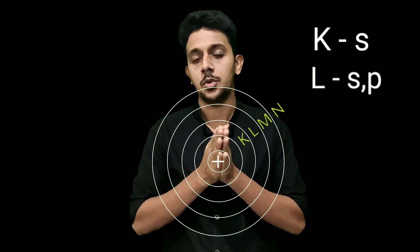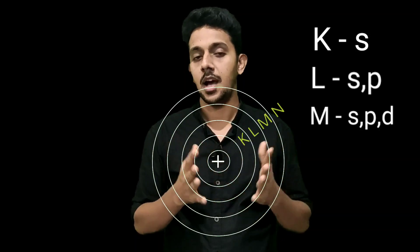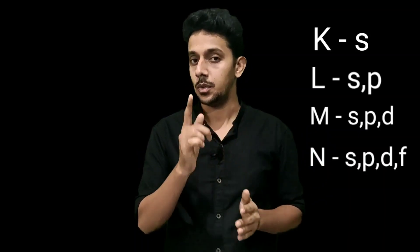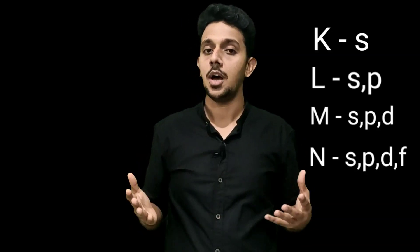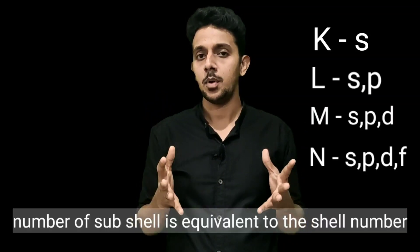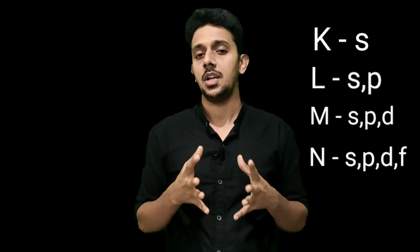The 1st shell has S. The 2nd shell has S and P. The 3rd shell has S and P. The 4th shell is N shell, which has 4 sub-shells — that is, S, P, D, F. That means the 1st shell has 1 sub-shell, the 2nd shell has 2 sub-shells, the 3rd shell has 3 sub-shells, and the 4th shell has 4 sub-shells. So the number of sub-shells is equivalent to the number of the shell.